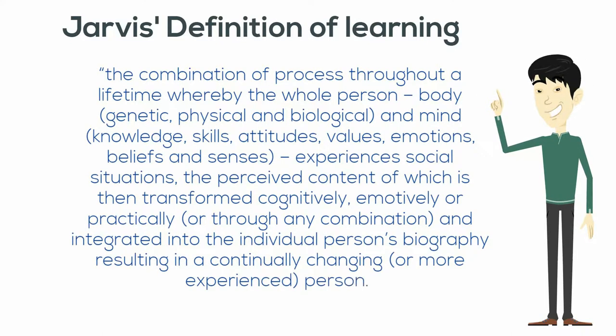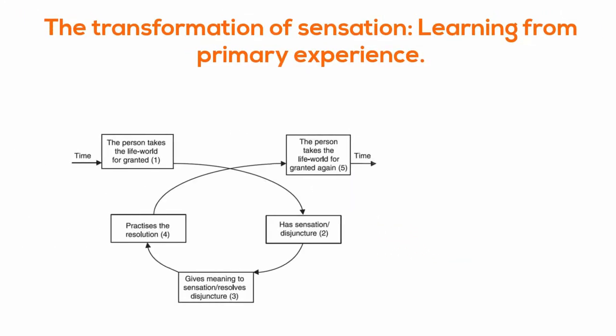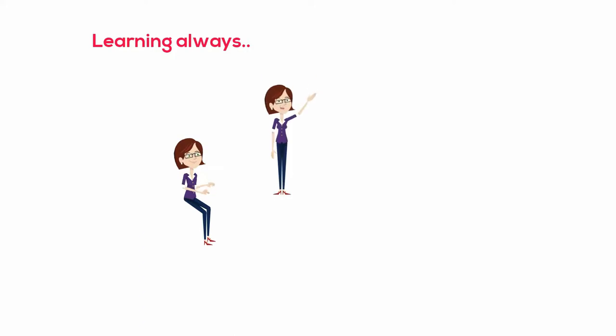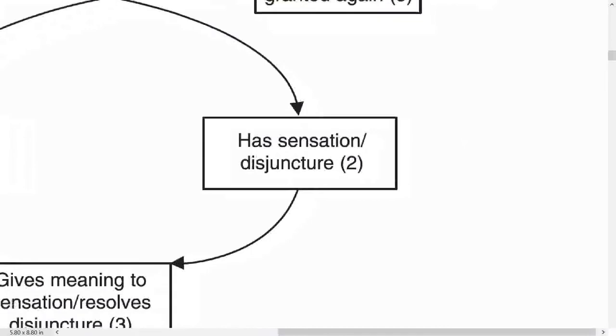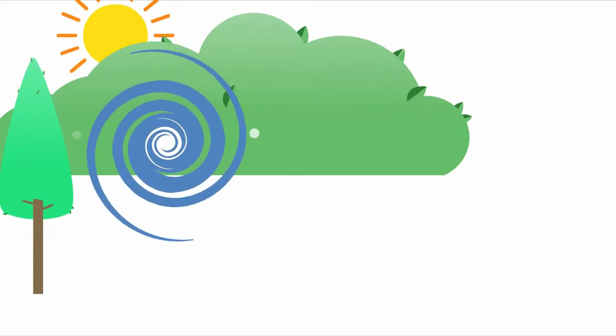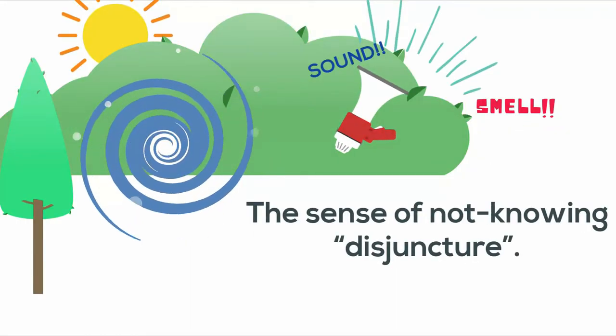This is integrated into an individual person's biography, resulting in a continually changing or more experienced person. Let's take a closer look at the graph in which Jarvis describes the transformation of sensation into learning. Jarvis argues that learning always begins with experience, triggered by a bodily sensation that initially makes no sense to us — it can be a strange sound, sight, or smell that we somehow cannot explain with our past experiences. Jarvis calls this sense of not knowing the 'disjuncture'.